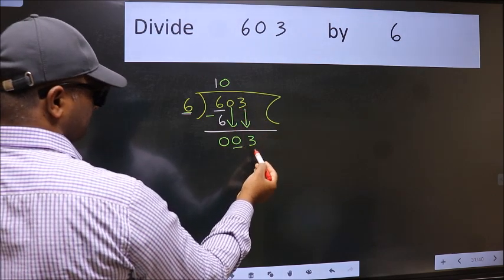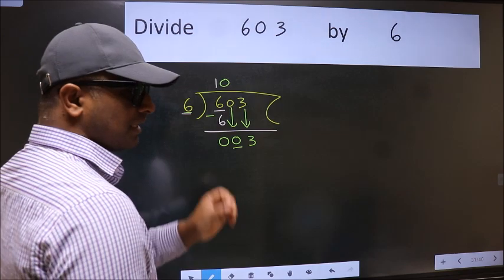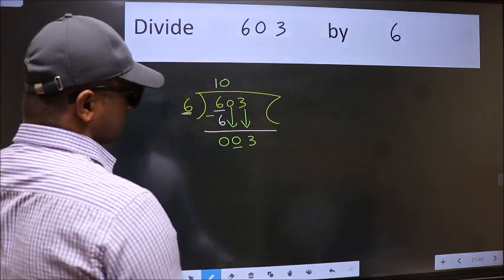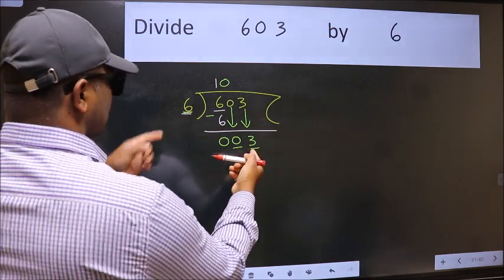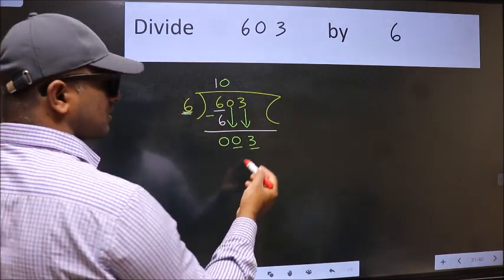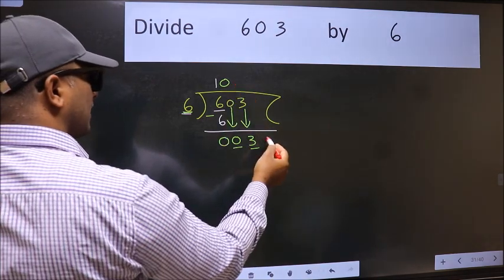After this step, the mistake happens. And the mistake is this: here we have 3 and here 6. 3 is smaller than 6, so what many do is they directly put dot, take zero, which is wrong.